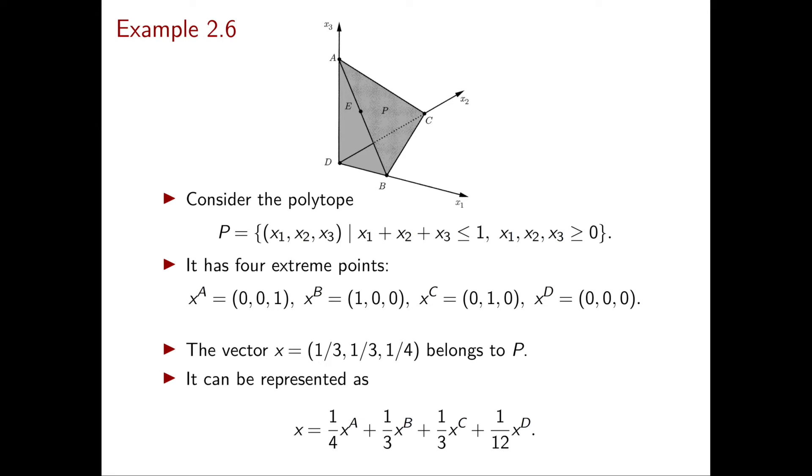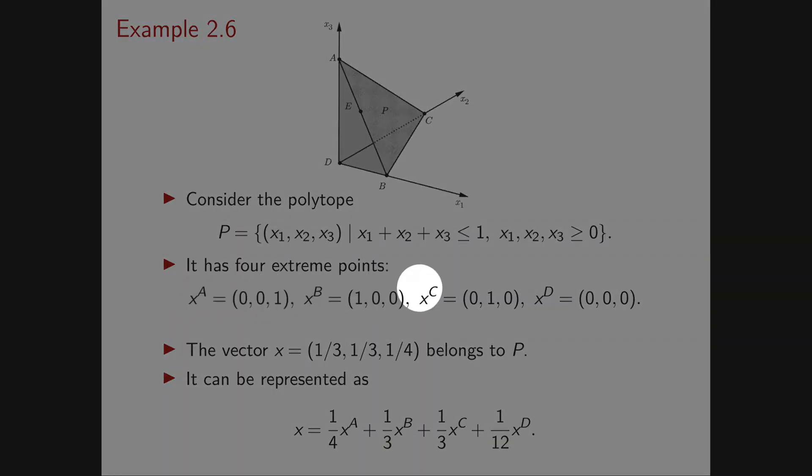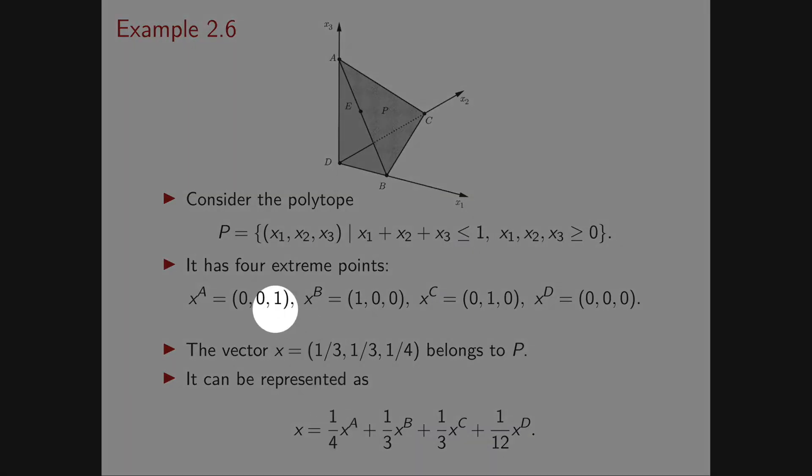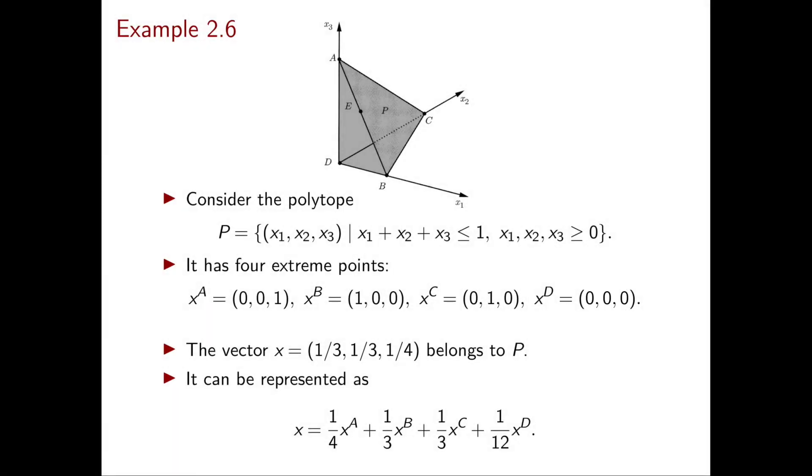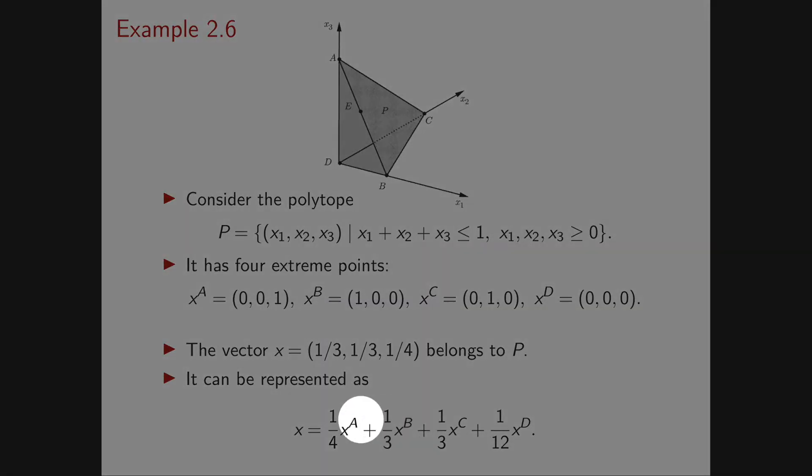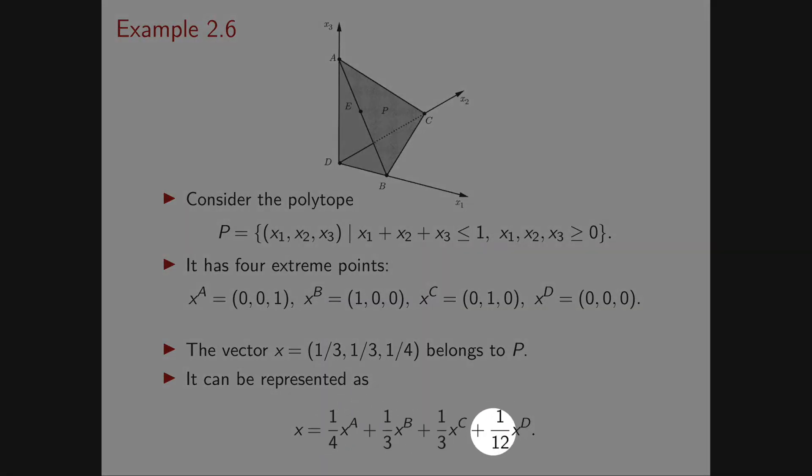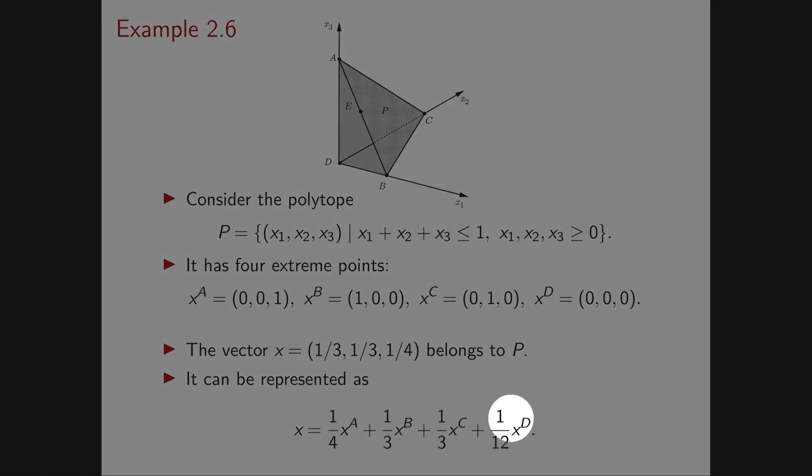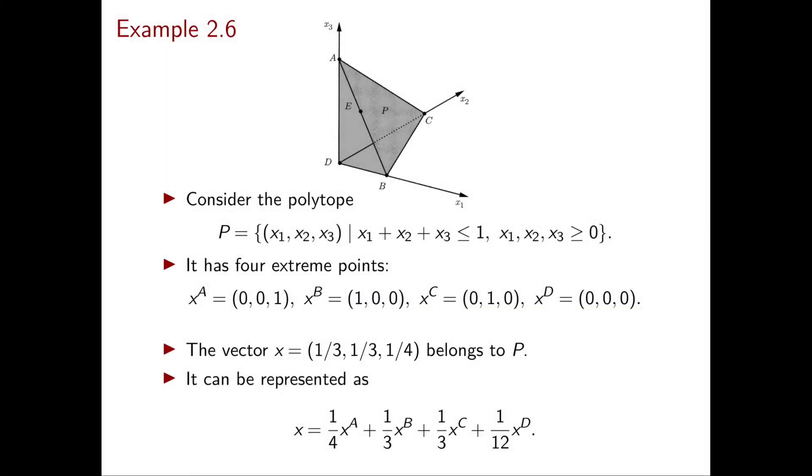We have to find the four λ's corresponding to the four extreme points. The λ's are: 1/4 for (0,0,1), 1/3 for (1,0,0), 1/3 for (0,1,0), and 1/12 for (0,0,0). We need to check this is a convex combination: the λ's are all non-negative and sum to 1. Finally, this sum gives us our vector x, which is (1/3, 1/3, 1/4).